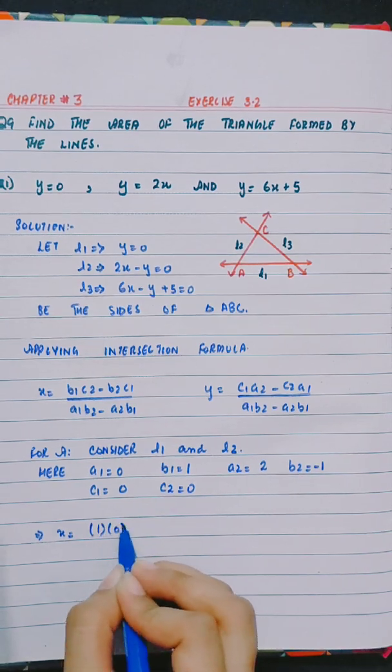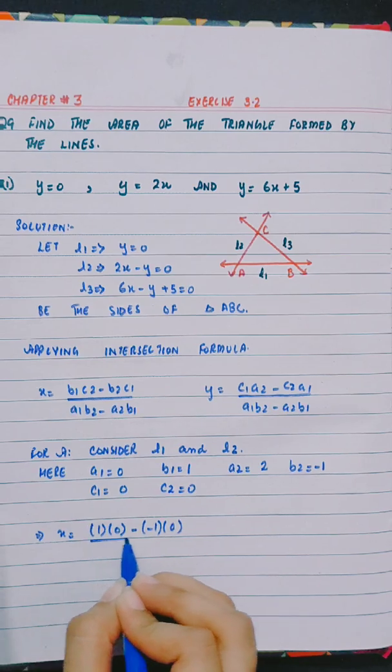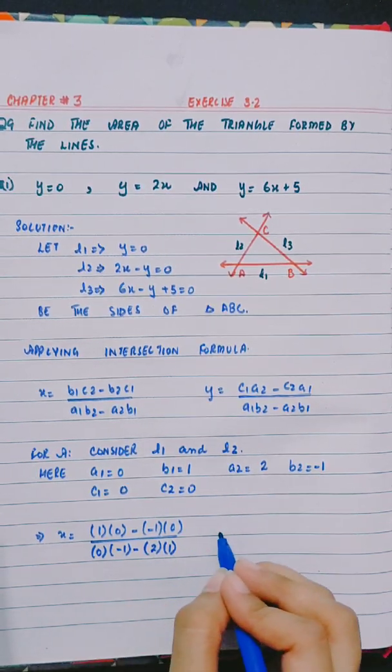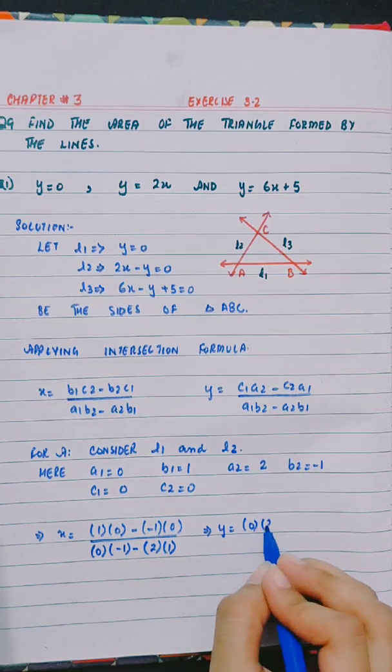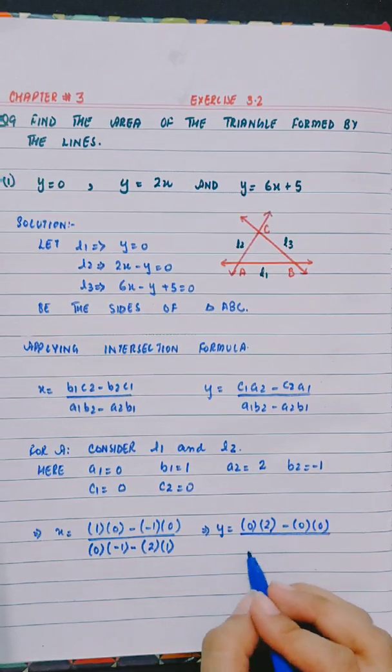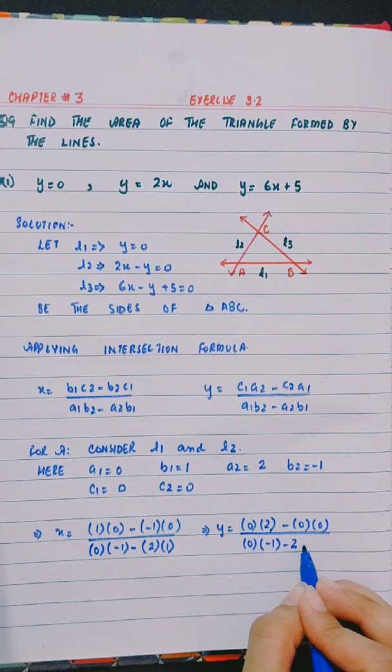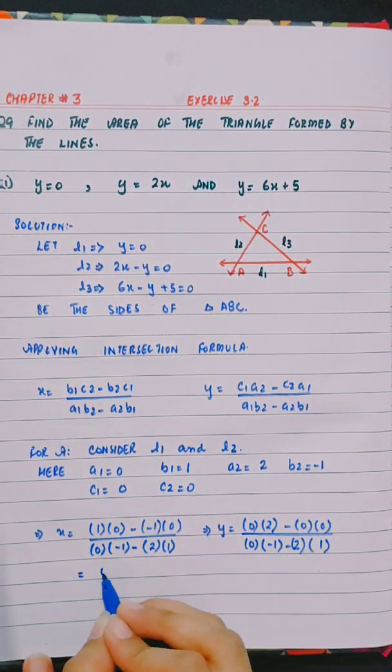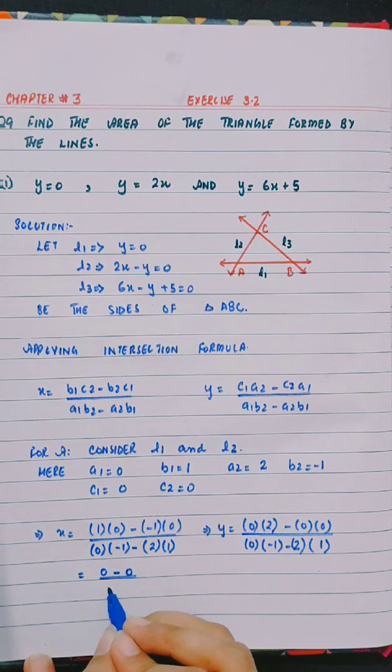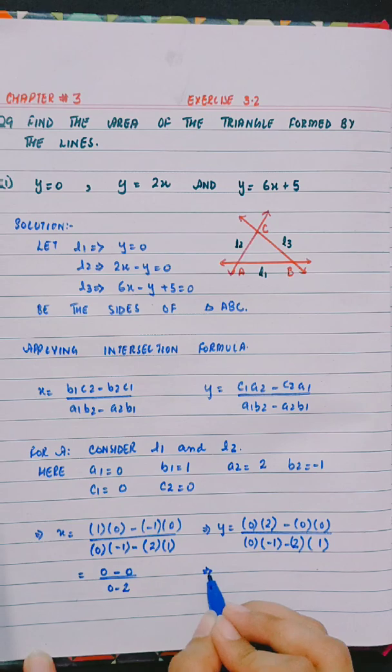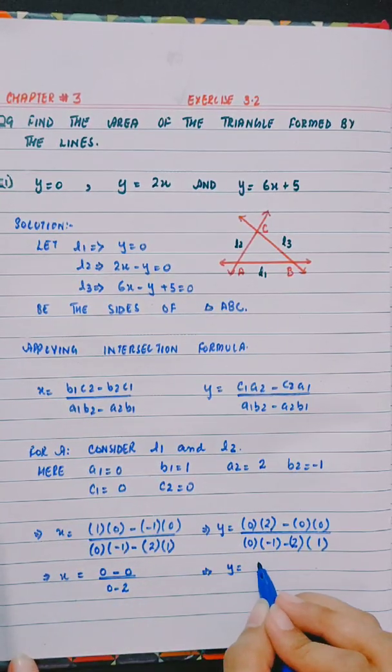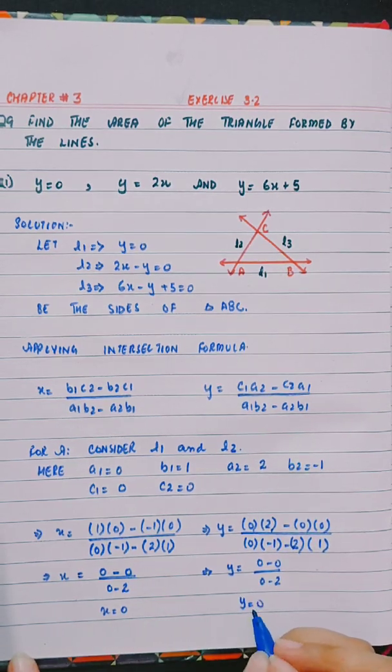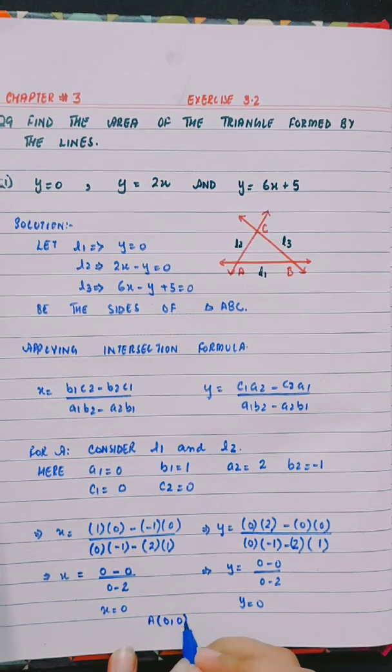x equals 1 into 0 minus minus 1 into 0 divided by 0 into minus 1 minus 2 into 1, which gives 0 divided by 0 minus 2 equals 0. y equals 0 minus 0 divided by 0 minus 2 equals 0. So A is (0, 0).